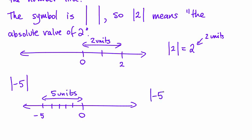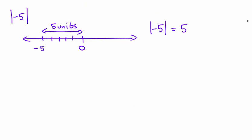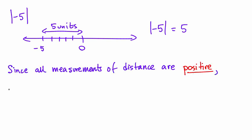And so the answer to how far away is negative 5 from zero, which is what absolute value means, is 5 units away from zero. And since all measurements of distance are positive, the absolute value of a number always results in a positive.